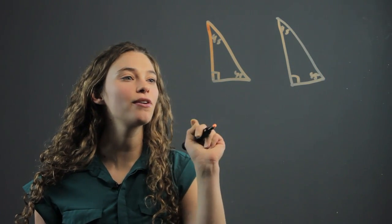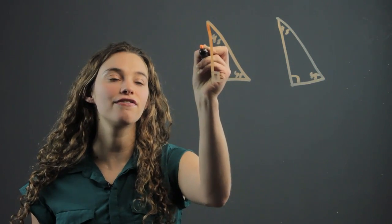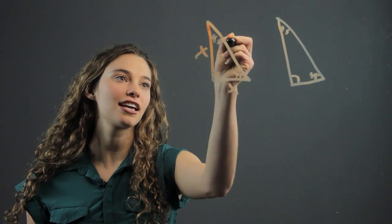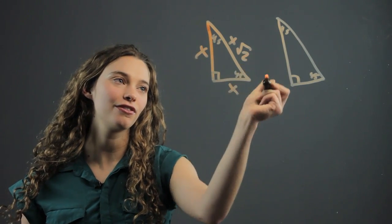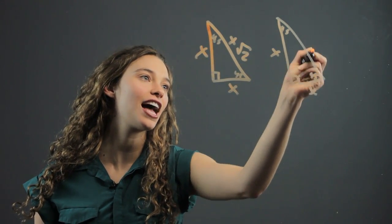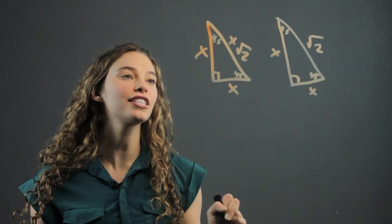So that means that they both have the ratio of x, x, and x root 2 for the sides. X is for the legs and x root 2 for the hypotenuse.